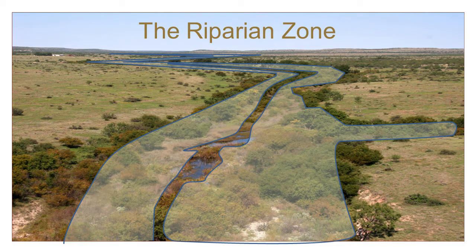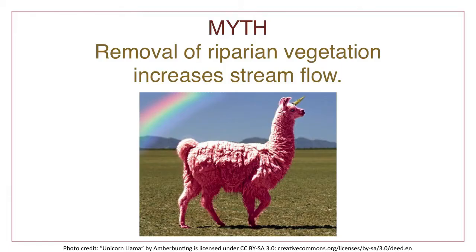Areas adjoining lakes, reservoirs, and wetlands are also considered riparian areas, but this short course will focus mainly on rivers and streams. So, let's start busting myths.